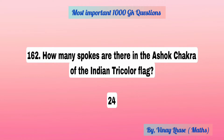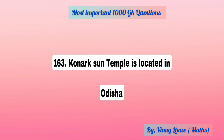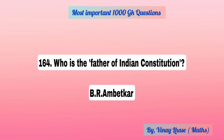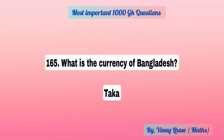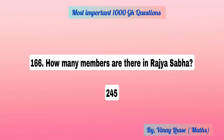How many spokes are there in Ashok Chakra? 24. Konark Temple is located in Odisha. Who is the father of the Indian constitution? B.R. Ambedkar. What is the currency of Bangladesh? Taka. How many members are there in Rajya Sabha? 245.